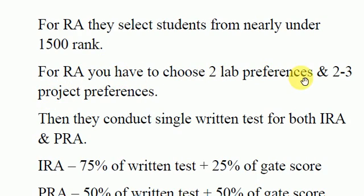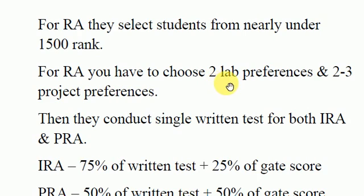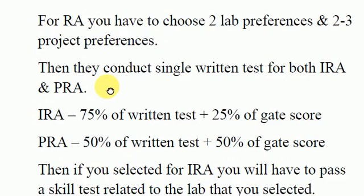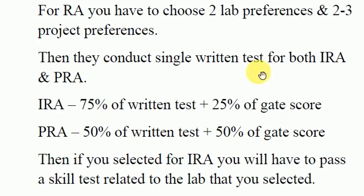For RA you have to choose two lab preferences and two to three project preferences. Since RA is of two types — IRA and PRA — you should apply for both. They will select whichever you are suitable for, but you have to fill the form for both.